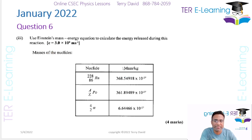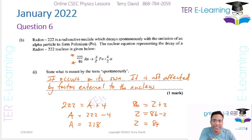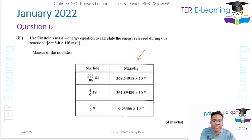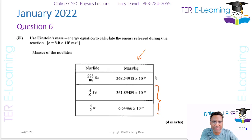The next part gives us mass information in kilograms and asks us to figure out the energy released in this reaction. This is a nuclear reaction and we need to find the mass defect. You add up all the masses on the left, add up all the masses on the right, and when you subtract that you get your mass defect. The mass on the left is going to be larger than the sum of the two masses on the right.